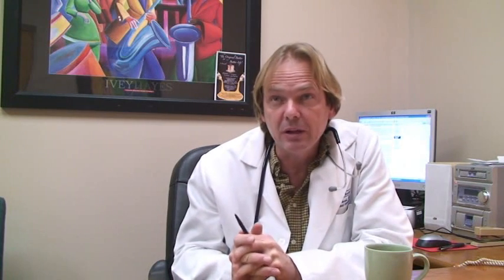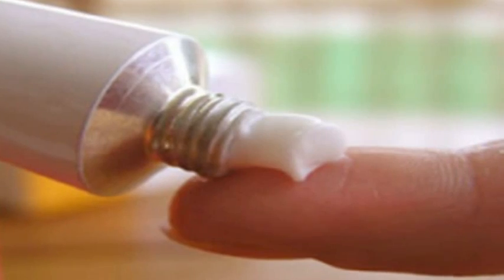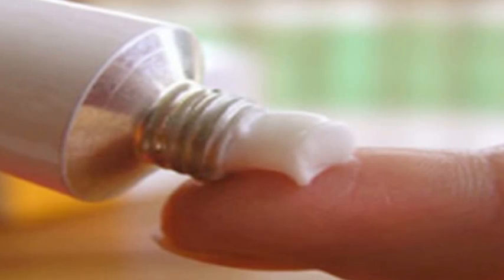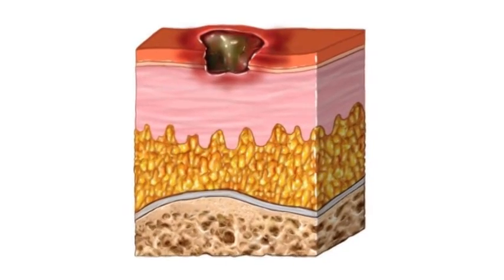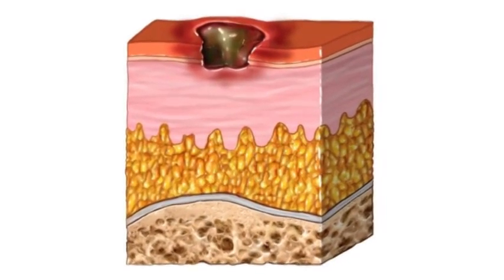So when you use 5-fluorouracil on that area — which oftentimes, by the way, looks a lot like a topical antibiotic ointment like Neosporin — when you use this on those cells, or on the skin, it tends to cause a deep sore, an ulcer.